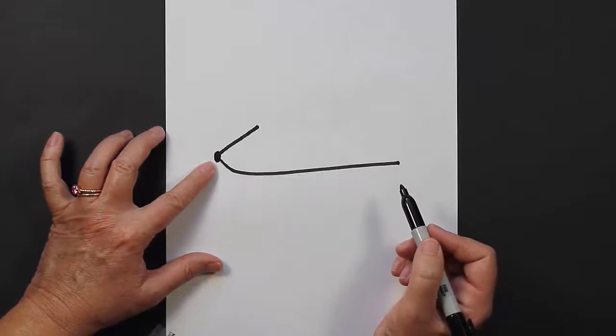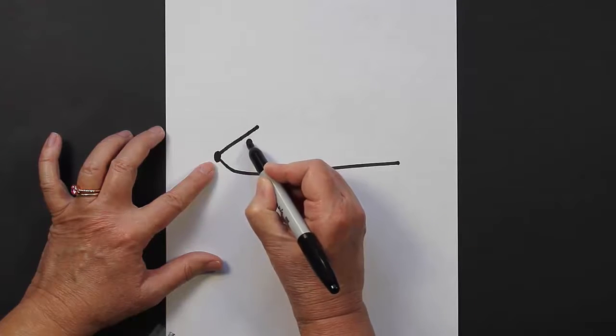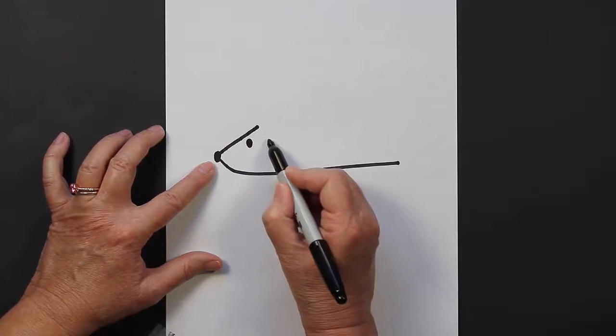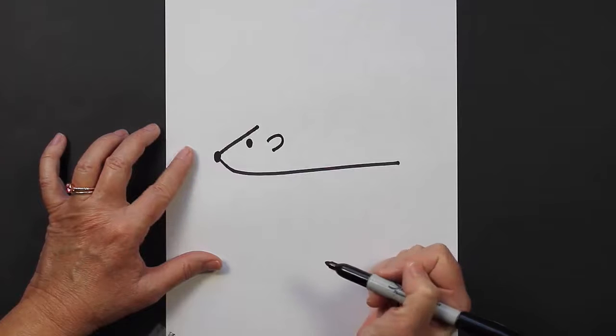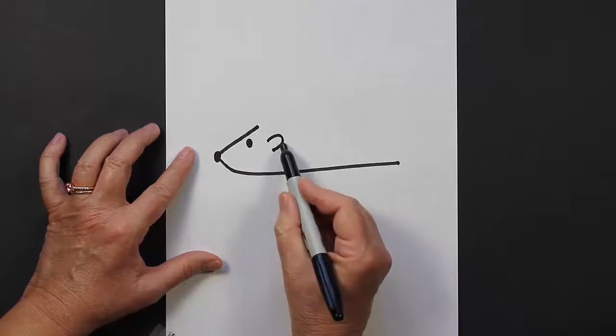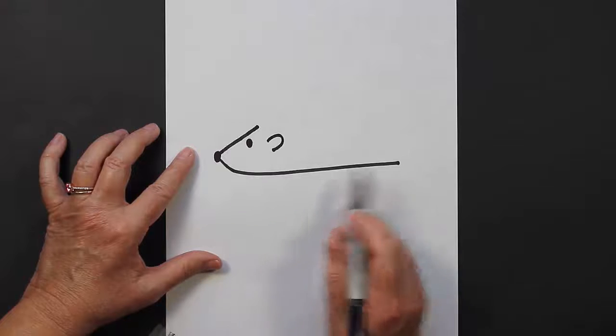Then an eye which is a round circle, fill it in, and then an upside down C. That's going to be his ear - his ear, his eye, and his nose - and the bottom part of his body.